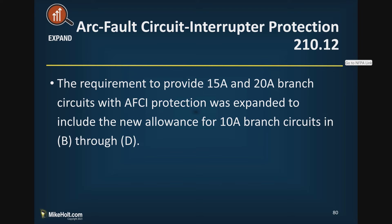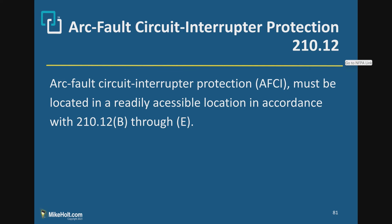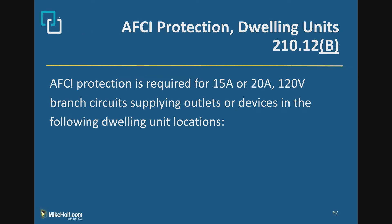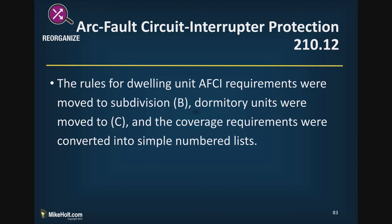Arc fault circuit interrupter protection must be located in a readily accessible location because you have to test and reset the button. To test an AFCI circuit breaker, you press the button — just like a GFCI — and it should be tested monthly. AFCI protection is required for 15 and 20 amp, 120 volt branch circuits supplying outlets or devices in dwelling unit locations. 10 amps is not included because we know a 10 amp circuit can't be used.